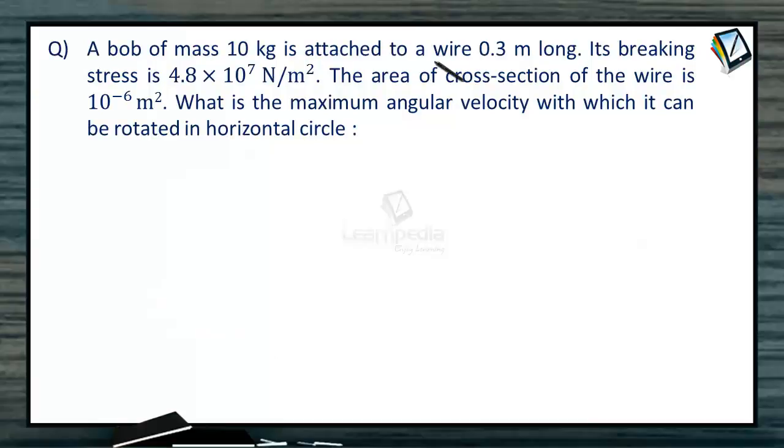Question. A bob of mass 10 kg is attached to a wire 0.3 meter long. Its breaking stress is 4.8 × 10⁷ Newton per meter square. The area of cross section of the wire is 10⁻⁶ meter square. What is the maximum angular velocity with which it can be rotated in a horizontal circle?